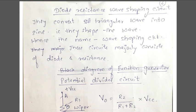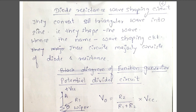The next prerequisite is a diode resistance wave shaping circuit. These circuits convert a triangular wave into a sine waveform — they shape the wave, hence the name wave shaping circuit. These circuits majorly consist of diodes and resistances. If I give a triangular waveform as input to this wave shaping circuit, at the output I get a sine waveform. Because it uses diodes and resistances as the major components, it is called a diode resistance wave shaping circuit.